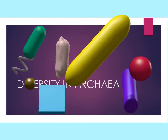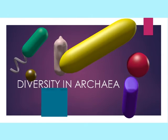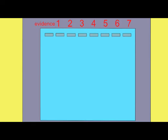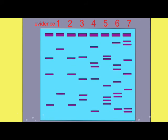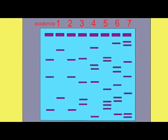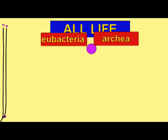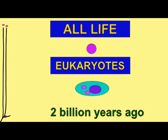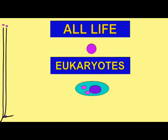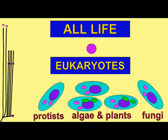Nitrogen fixation is the process by which nitrogen gas is incorporated into ammonia. Only prokaryotic cells do this. This ammonia can be converted to nitrates and nitrites through nitrification, or converted back into nitrogen gas in denitrification. Blue-green algae may produce heterocysts where nitrogen fixation occurs, and some nitrogen-fixing bacteria live in specialized root nodules in a symbiotic relationship with plants.